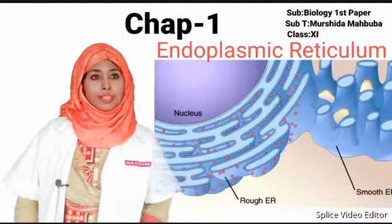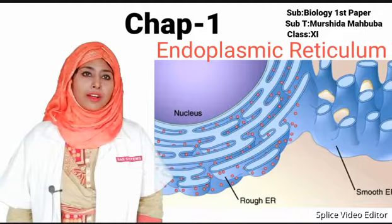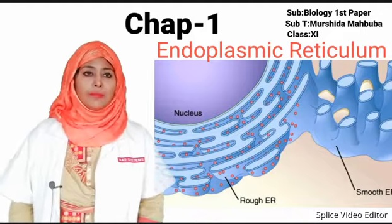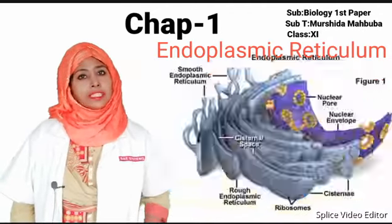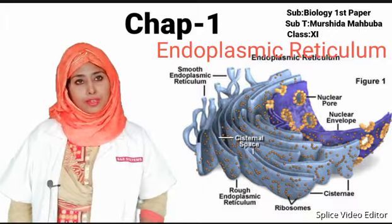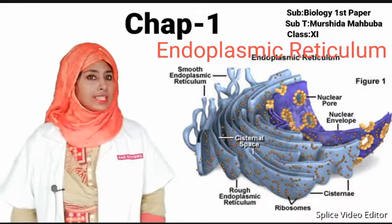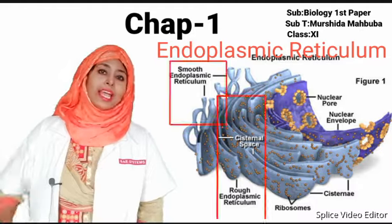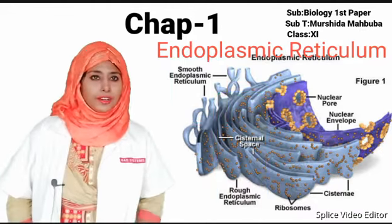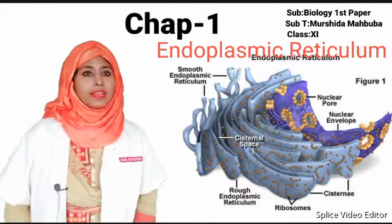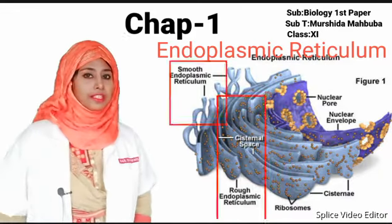Endoplasmic reticulum: In the cytoplasm of eukaryotic cells, a complex network of membranes — bow tubular, vesicular, or sac-like bodies — remains extended from the nuclear membrane to the cell membrane, which is known as the endoplasmic reticulum. In 1945, K.R. Porter discovered the endoplasmic reticulum in the liver cell.